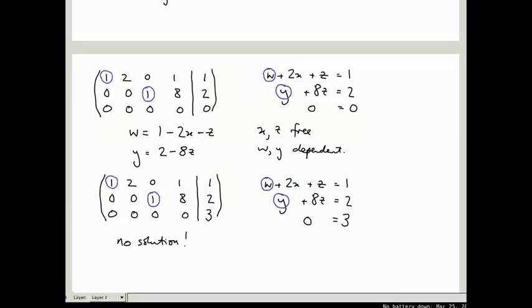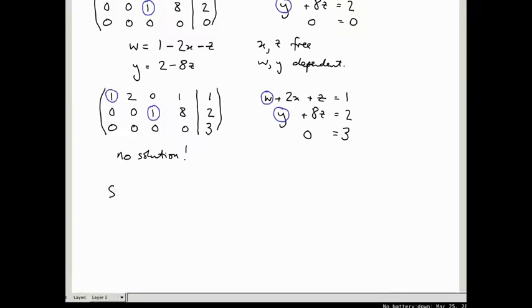So let's just quickly recap what we've done. We've taken a system of simultaneous equations. We wrote down an augmented matrix. We performed row operations to put the matrix part of this on the left hand side of the bar into reduced echelon form.